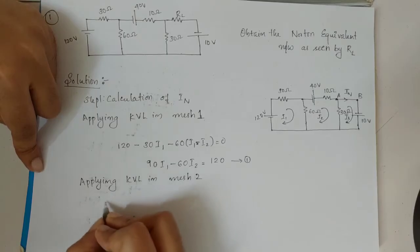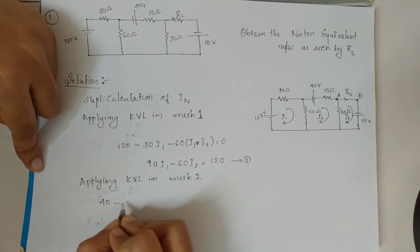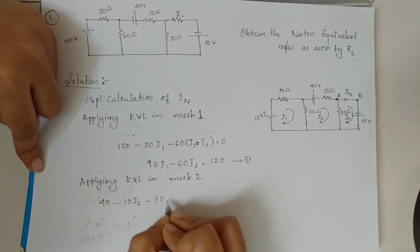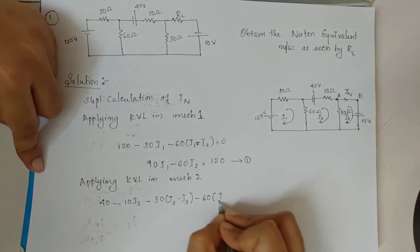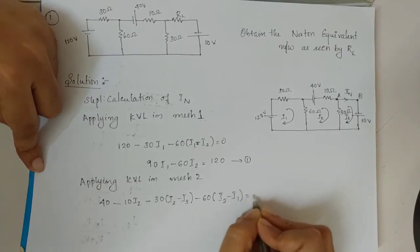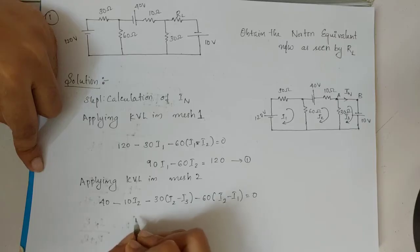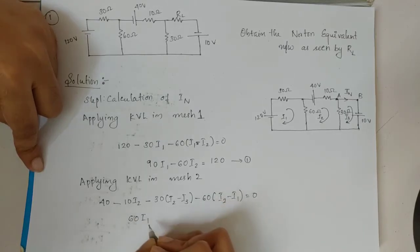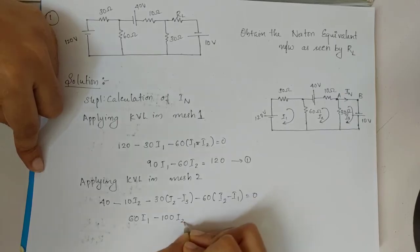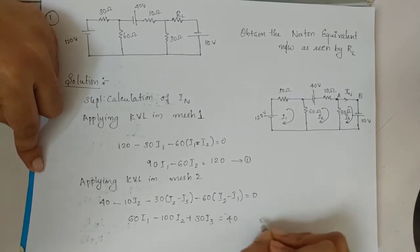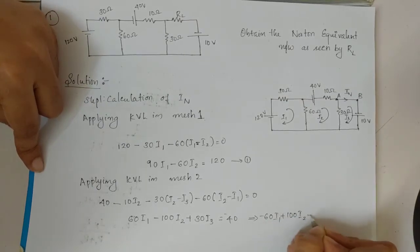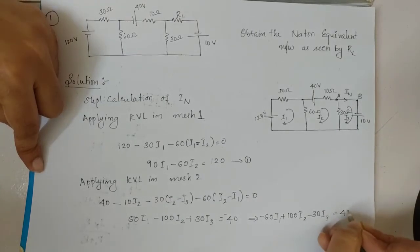Applying KVL to mesh 2: 40 minus 10·I2 minus 30·(I2 minus I3) minus 60·(I2 minus I1) equals 0. That gives minus 60·I1 plus 100·I2 minus 30·I3 equals 40. This is the second mesh equation.